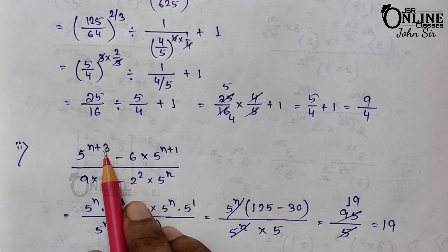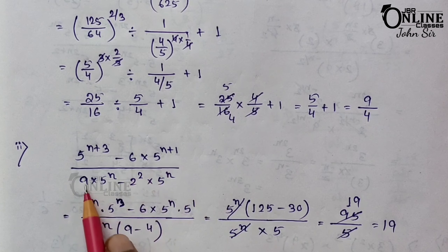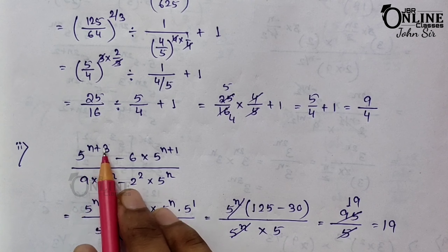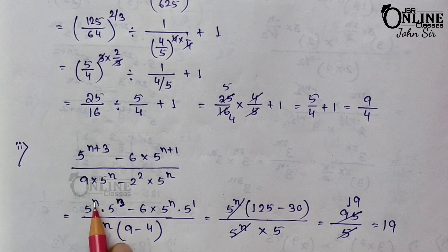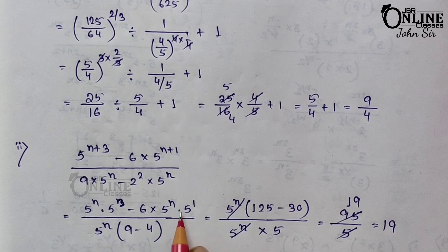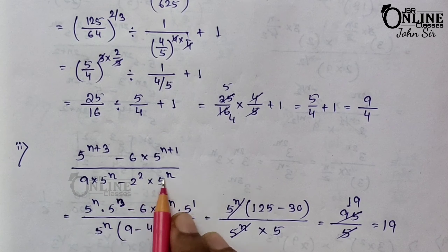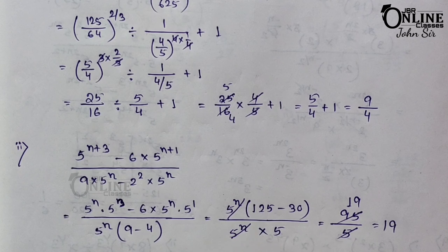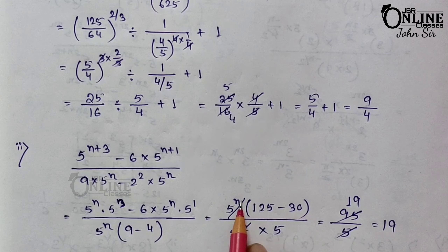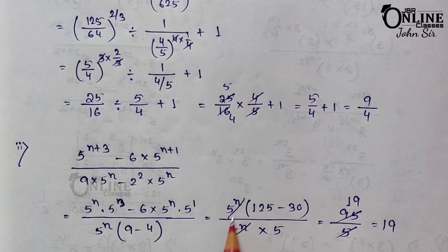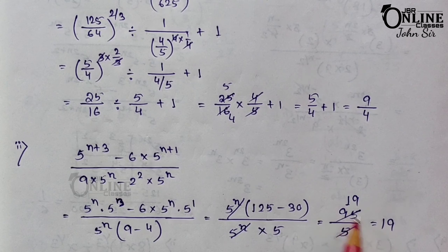Sum 12.2: [5^(n+3) − 6×5^(n+1)] / [9×5^n − 2²×5^n]. Write 5^(n+3) = 5^n × 5^3 and 5^(n+1) = 5^n × 5^1. Factor 5^n from numerator: 5^n(125 − 30). In denominator factor 5^n: 5^n(9 − 4) = 5^n × 5. Cancel 5^n, giving 95/5 = 19.